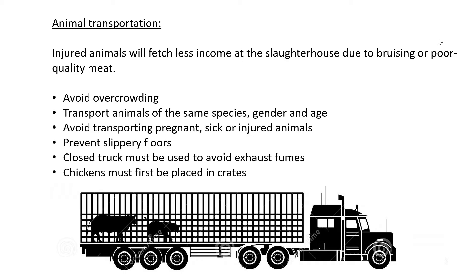To avoid injury during transport: avoid overcrowding the animals in a truck, because if there are too many animals they will bump against one another and hurt each other. Secondly, transport animals of the same species, gender, and age. If you put bulls and cows together, the bull will try to mount the cow and could cause injury. Mixing sheep and pigs also causes stress because they don't understand each other's behaviours. Different ages can also cause harm, as older animals may push younger ones around.